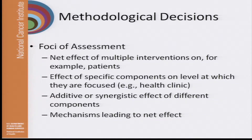Then we have to say: what's the effect of specific components on the level at which they are focused? Using Jane's table, we might debate — she says knowledge about cancer and screening options for the patient, we want to increase that. Provider team: clinician knowledge and communication about recommended screenings, we want to increase that. At the local community level, we want community screening promotion efforts. So we want to increase knowledge, behavior, and screening — but those are decisions we have to make carefully.